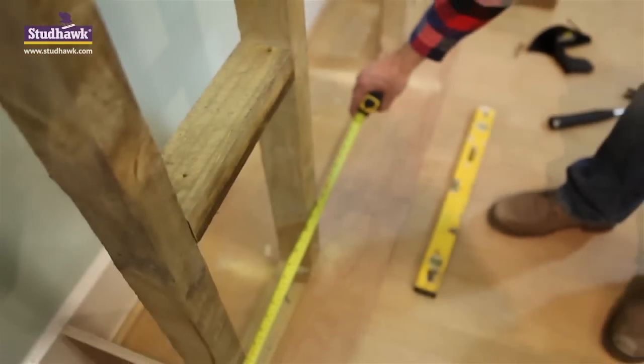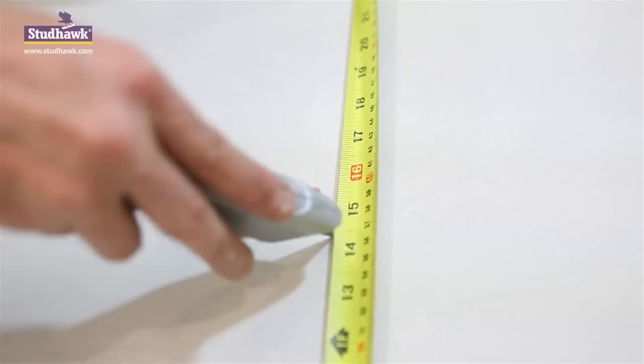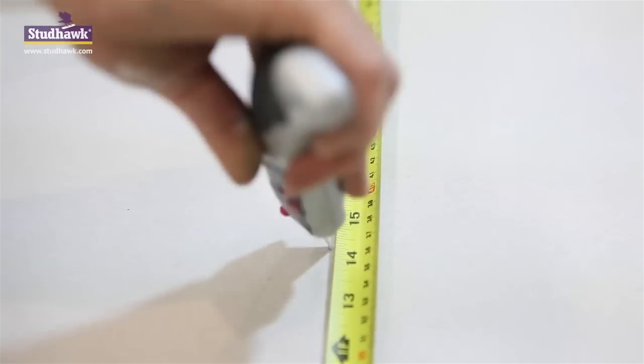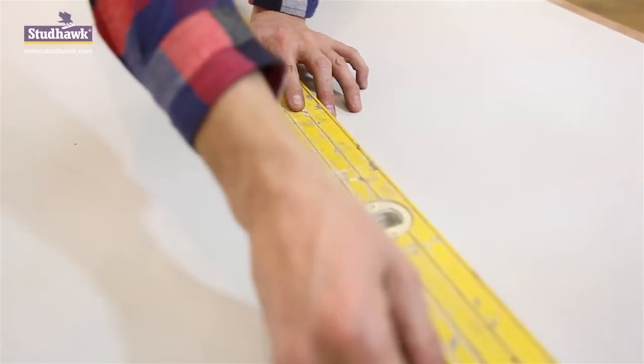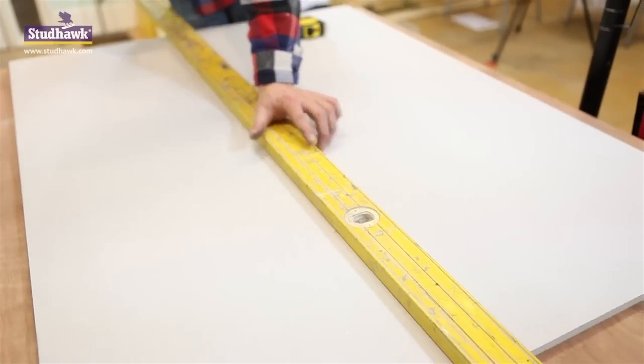Measure the plasterboard for width, check the bottom for parallel. Professionals don't use a pencil, they use the marking knife. I've got two little holes to align my level and score the plasterboard.